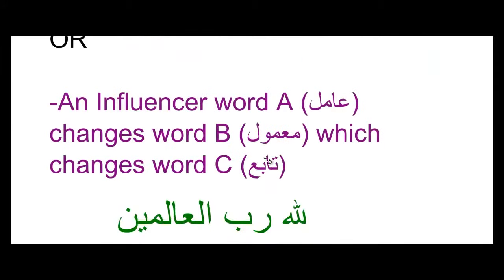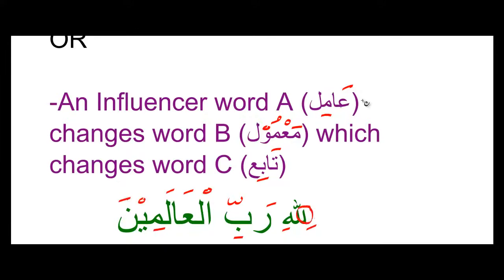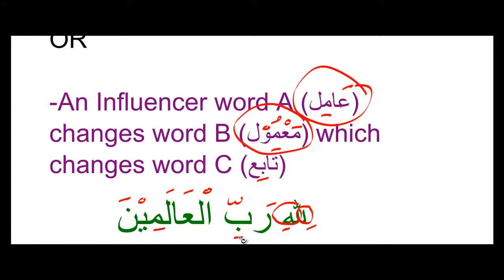Another way that i'raab works is that an influencer word A (amil) changes word B (ma'amool), which changes word C, which is tabi'. Taking that same verse — 'lillahi rabbil alameen' — we have laam, which is the amil, then Allah, which is the ma'amool, that's why it has a kasra. Then we have 'rab', and as I said in the last video, rab is an adjective describing Allah, so rab takes the same haraka — the same vowel — as Allah does. Because Allah has a kasra, rab also gets a kasra. So rab is what's known as a tabi'.